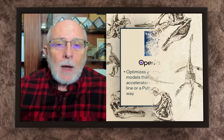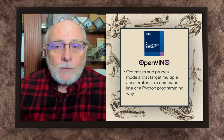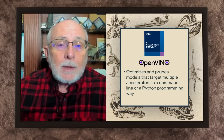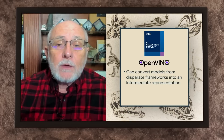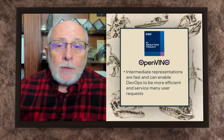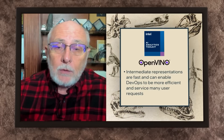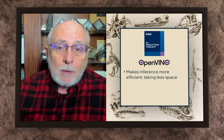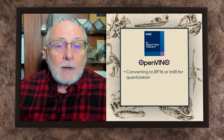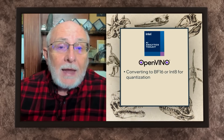We optimize it using OpenVINO for scoring an image or inferencing. What do I mean by optimized with OpenVINO? It optimizes and prunes PyTorch, TensorFlow, and other models to target multiple accelerators in an easy command line or Python programming way. It can convert models from disparate frameworks such as PyTorch, TensorFlow, or ONNX into an intermediate representation. This intermediate representation is fast and can enable your DevOps to be more efficient and able to service many user requests. For performance and deployment purposes, OpenVINO is a great tool for accelerating and making that inference more efficient, taking less space, converting it down to floating point 16, or maybe even INT8 for quantization.